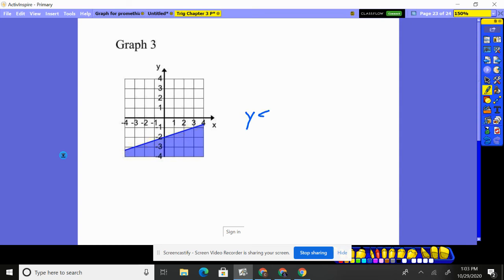So y is less than solid line, so we put or equal to, has a y-intercept of negative two. And what is the slope? It appears to go up one over three, so that's one third x. It's going up to the right corner, so that means it's a positive slope. So there's the one for graph three.